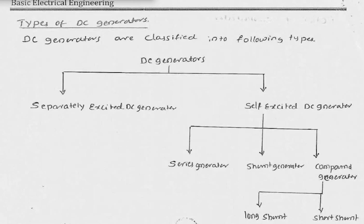We also looked into how the DC generator operates and the action of the commutator segment. The commutator segment can be thought of as a mechanical rectifier which converts the negative cycle into a positive cycle. That is how we get all the electrical energy generated in direct current form.